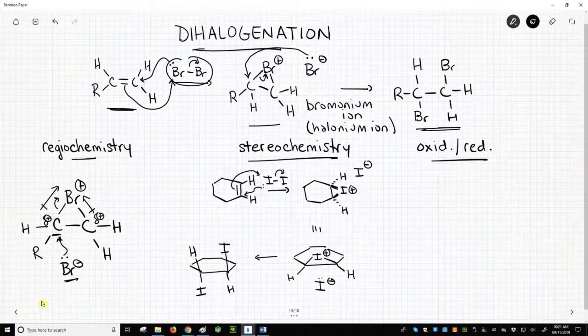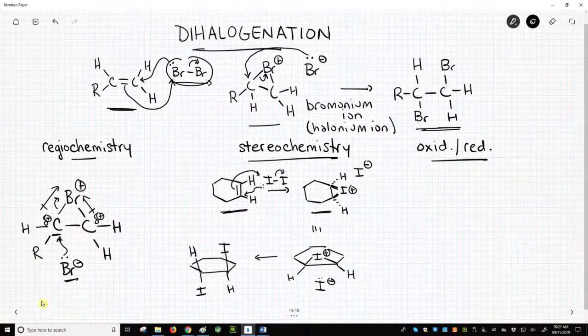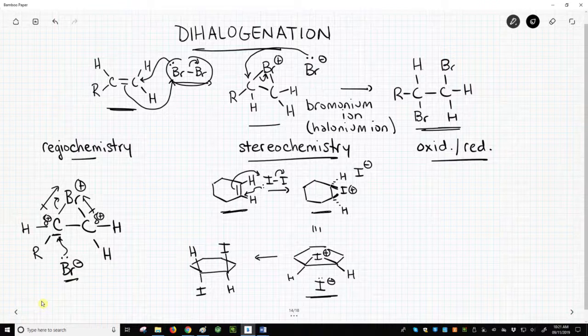How about stereochemistry? Dihalogenation is an anti-addition. Let's see why with a cyclic alkene, cyclohexene. Here is the iodonium ion that forms from cyclohexene, and I've redrawn it toward the bottom with some perspective that hopefully makes it clearer.